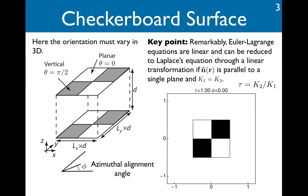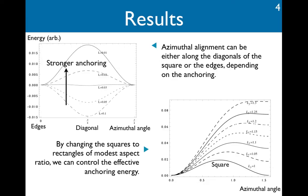So the results of my calculation are plotted here as plots of energy as a function of azimuthal alignment angle. We find that the square surface aligns the nematic either along the diagonals or along the edges, depending on how strong the surface is able to impose the anchoring.